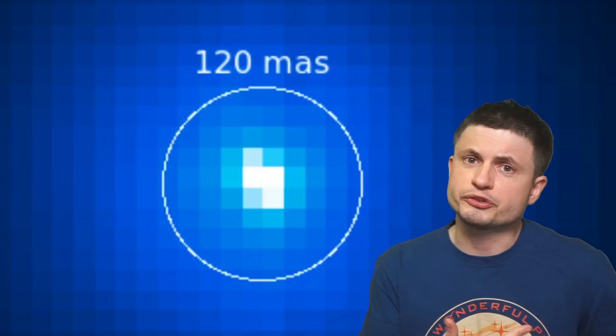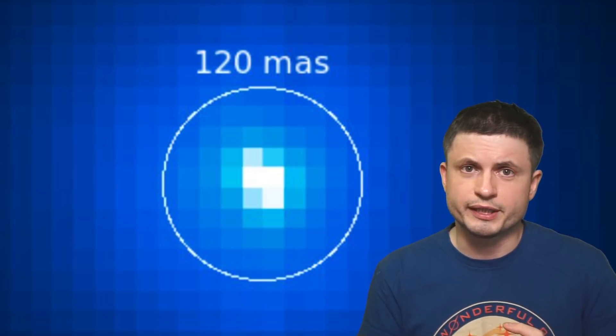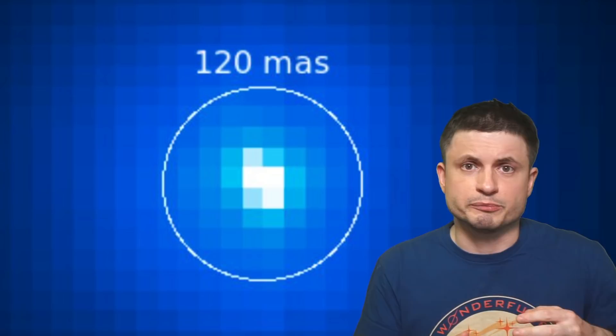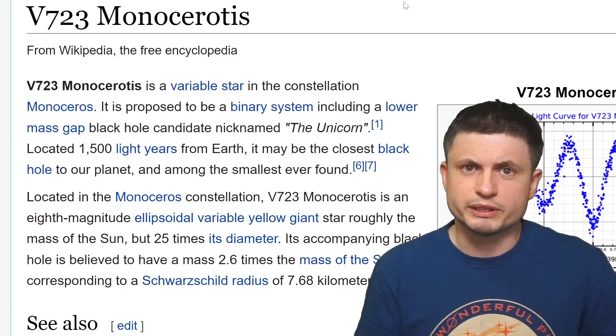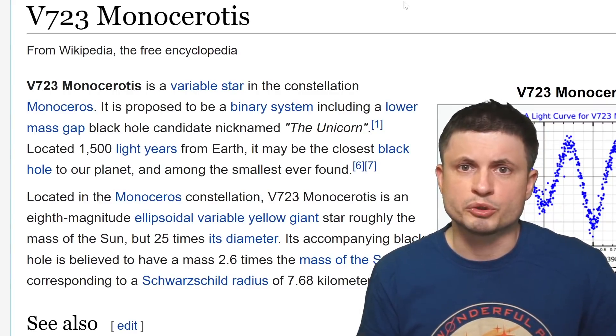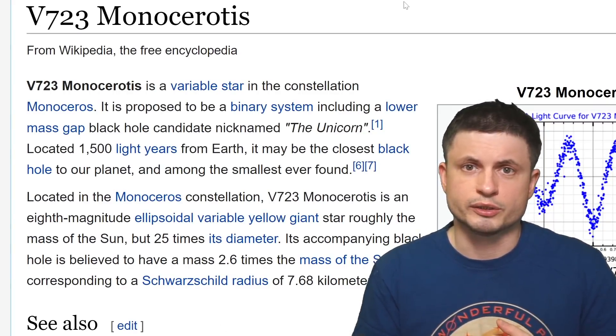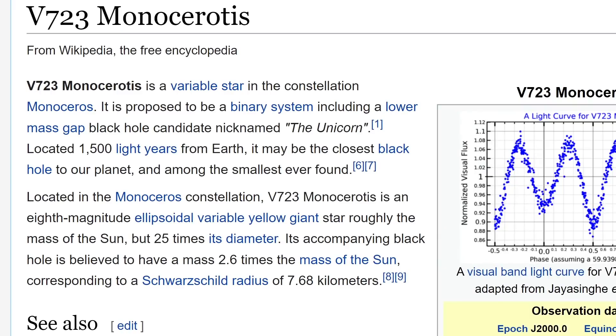But in terms of the closest black hole to us as of today, well, the other one, LB1, was also disqualified a few months ago. And so at the moment it looks like V723 Monocerotus is still the closest black hole that we've discovered to date. This is the black hole that we sometimes refer to as the unicorn. You can learn more about this in one of the videos right there or in the description below.